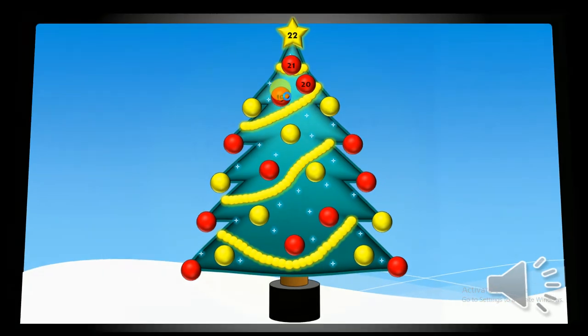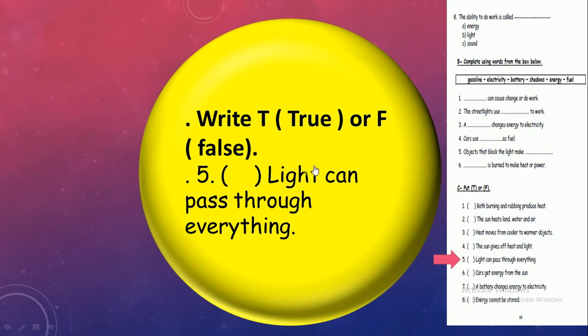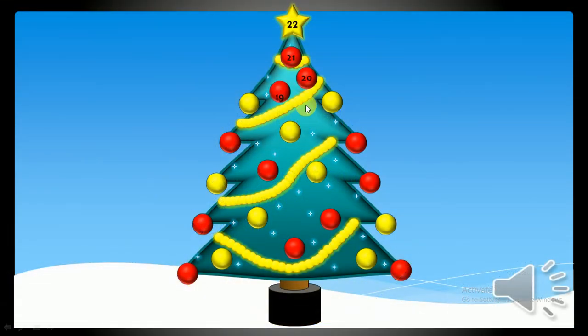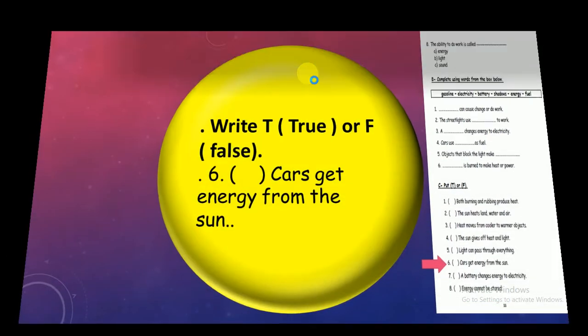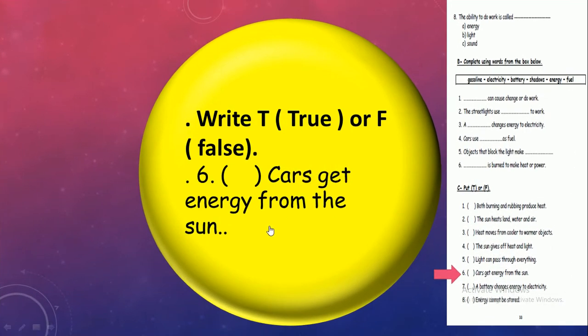Number 19. Light can pass through everything? No, of course not. So light cannot pass through you and me. So we make shadows. Number 20. Cars get energy from the sun? No, false. I hope they can get energy from the sun, but not. So cars get energy from gasoline or fuel.